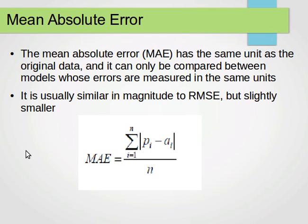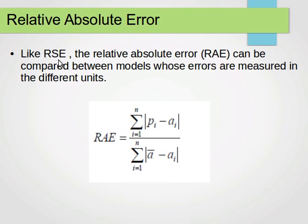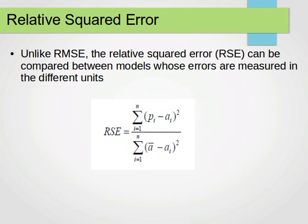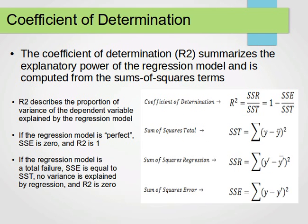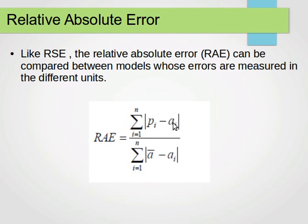The next one is the Relative Absolute Error (RAE). Like the Relative Squared Error, the RAE can be compared between models whose errors are measured in different units. The formula is very similar to the RSE, but instead of squaring we use the absolute value: the summation of |p(i) minus a(i)| divided by the summation of |a-bar minus a(i)|, where p is the predicted value, a is the actual value, a-bar is the mean of the actual values, and we loop through all n instances.